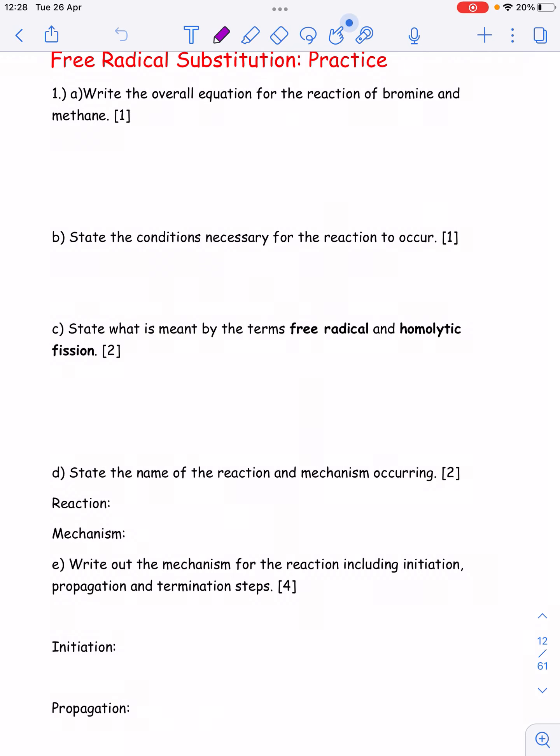Write the overall equation for the reaction of bromine and methane. With different organic chemistry reactions, you need to recognize what kind of reaction you're dealing with based on the starting materials. With methane, I have an alkane, and with bromine, I have a halogen, so that's a clue we're making a combination of these two things, which is a halogenoalkane. A halogenoalkane is a molecule that is an alkane with at least one halogen on it, in this case bromine.